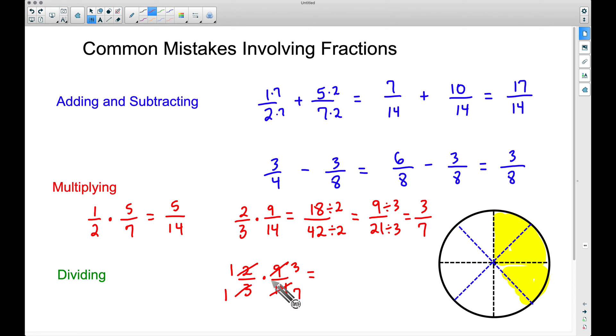Well, let's take top times top. 1 times 3 is 3. Bottom times bottom. 1 times 7 is 7. Hello. There is the same answer. This shortcut, this trick here, only works with multiplying.